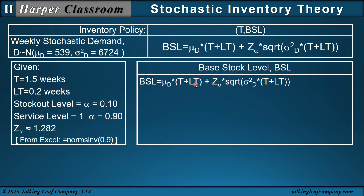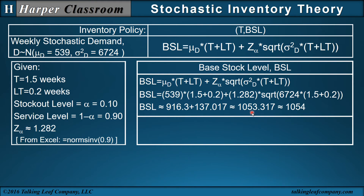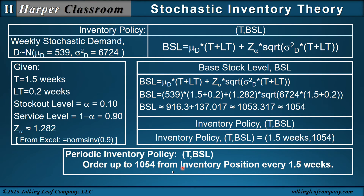To copy down this equation, we substitute in: the mean is 539, t plus Lt is 1.5 plus 0.2 weeks, z is 1.282, and the square root of the variance 6724 times t plus Lt, which is 1.5 plus 0.2. Notice I put the variance inside the square root sign instead of the standard deviation outside the square root sign. Doing the arithmetic, I have 1053.317. I round it up to 1054 — I could have rounded either way, I arbitrarily rounded up. The inventory policy then, tBSL, is 1.5 weeks and 1054, so the periodic inventory policy is order up to 1054 from the inventory position every 1.5 weeks.